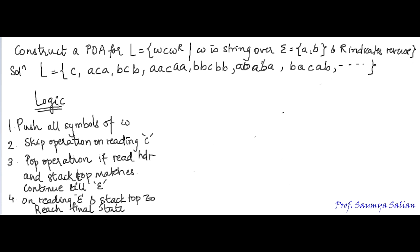Here is the logic summary: push all symbols of W; perform a skip operation on reading C; perform a pop operation if the read head and the stack top match; continue this process until you read epsilon. On reading epsilon, if the stack top is Z0, you reach the final state.